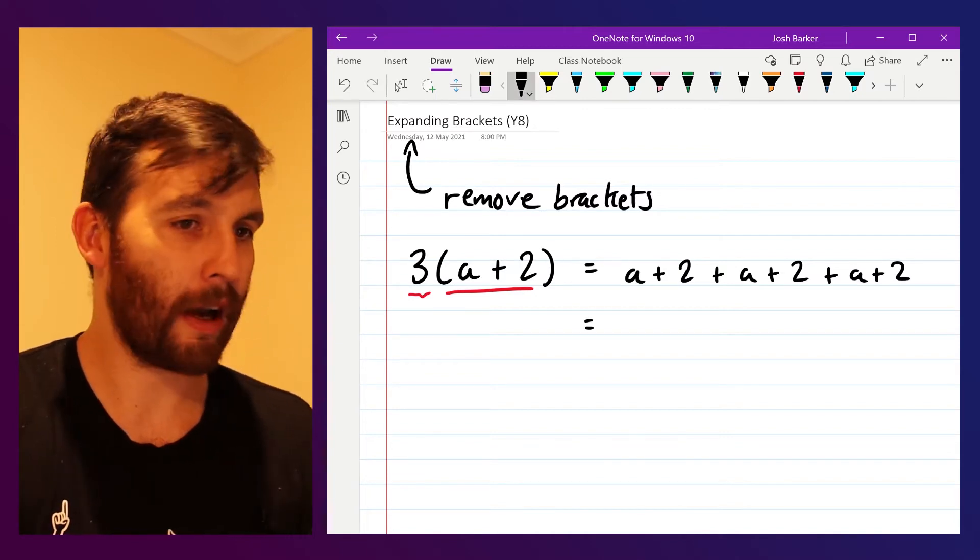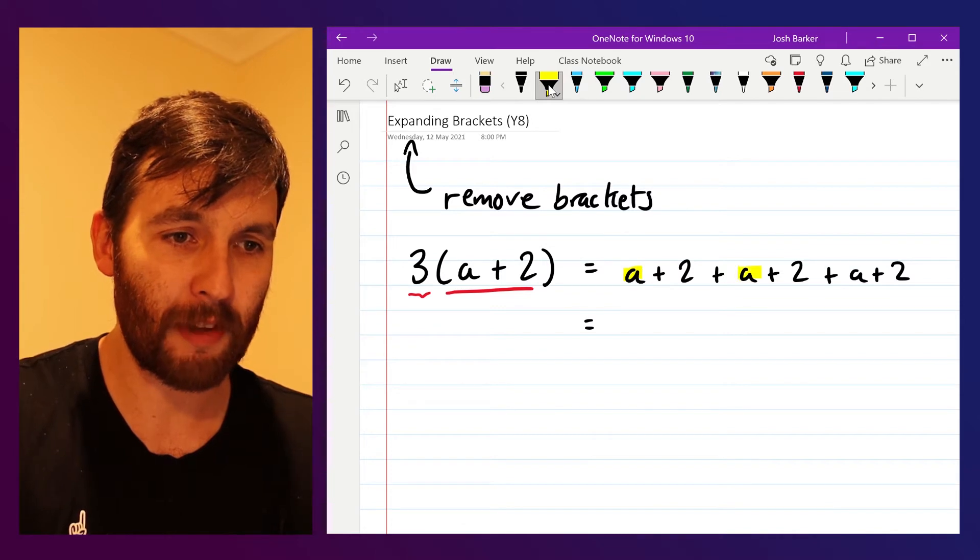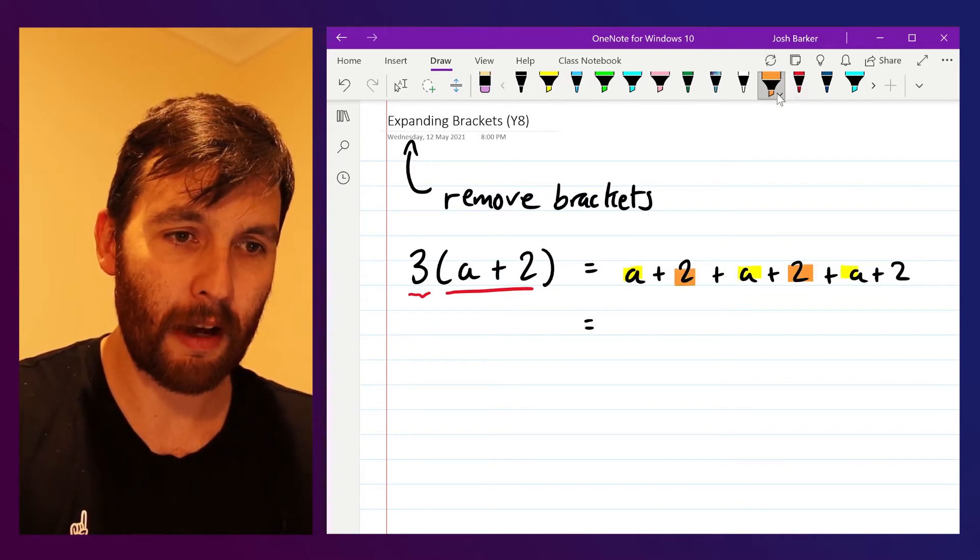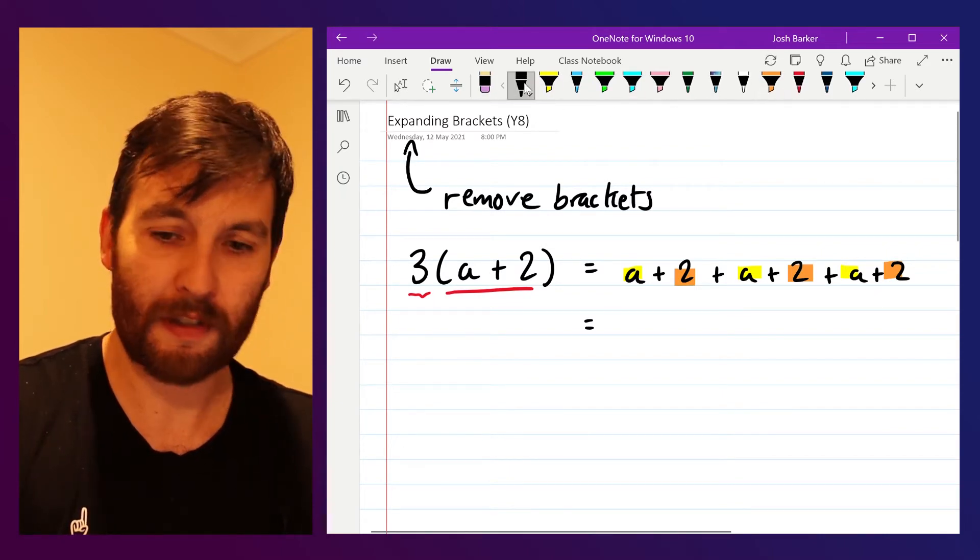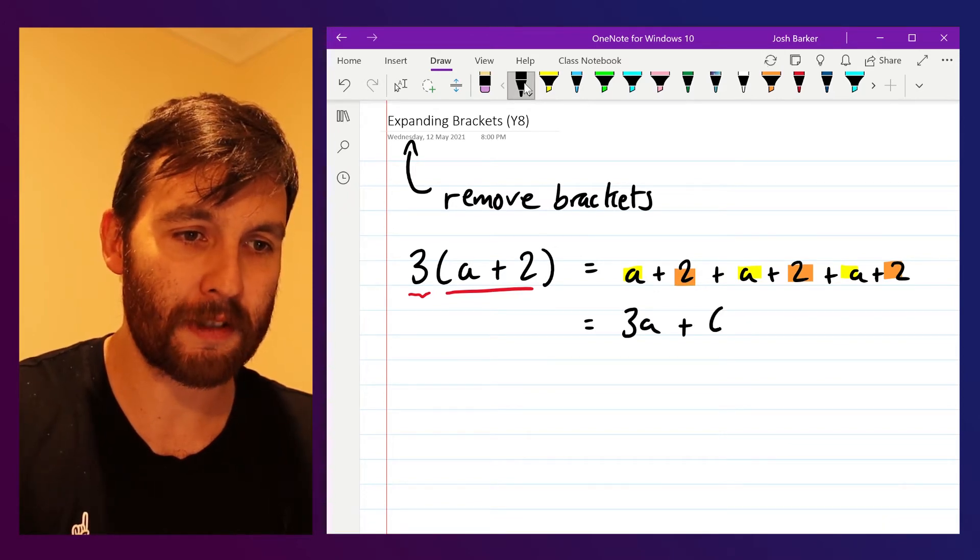Now if I combine the like terms that I have in this expression, I can add my three a's together. I can add my three lots of 2 together as well, and three lots of a will give me 3a, and 2 plus 2 plus 2 gives us 6.